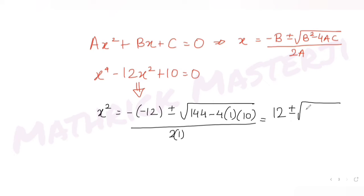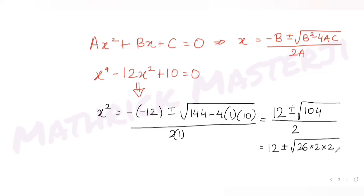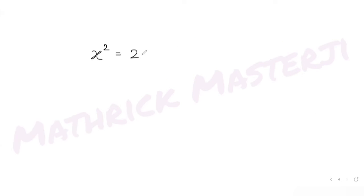This gives us x² = (12 ± √104) / 2. Since 104 = 4 × 26, we get √104 = 2√26. So x² = (12 ± 2√26) / 2, which simplifies to x² = 6 ± √26.